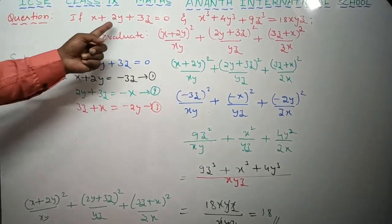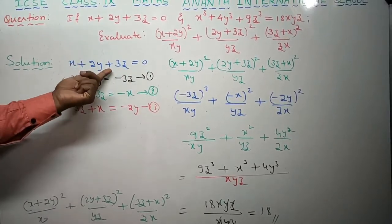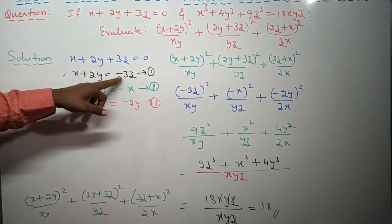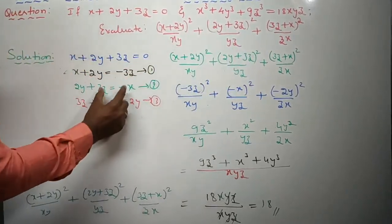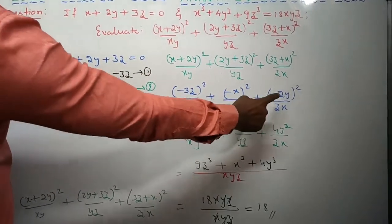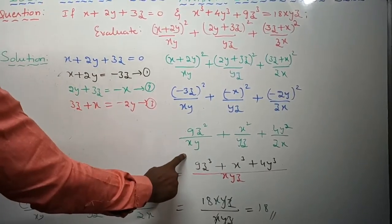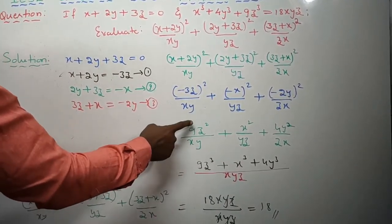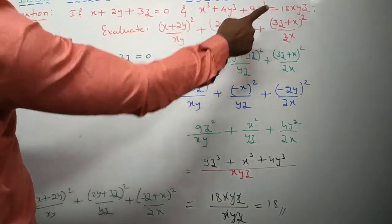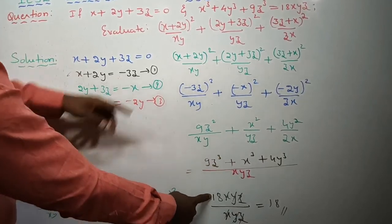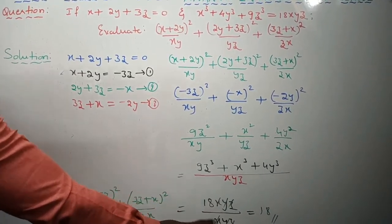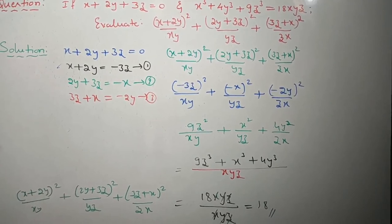Let me give a brief revision. Given data was written. From the given equation, I made x plus 2y the left-hand side with minus 3z on the right, equation 1. Similarly for the other pairs — equations 2 and 3. I substituted these into the fractions, simplified the numerators, took the LCM as xyz, multiplied numerator and denominator accordingly, getting x cubed plus 4y cubed plus 9z cubed over xyz. From the given data, that equals 18xyz over xyz — xyz cancels and the final answer is 18, children.